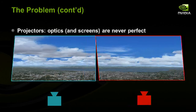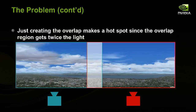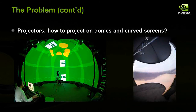There are some inherent problems with overlapping projectors. Neither the optics nor screens are ever perfect, so you need to account for geometry differences between projectors — even consecutive serial-number units can show obvious differences. Additionally, in the overlap region, brightness is twice as high because pixels are displayed by both projectors, so you need to ramp off the intensity there for a smooth transition. People also want to project onto curved screens or domes for truly immersive experiences.